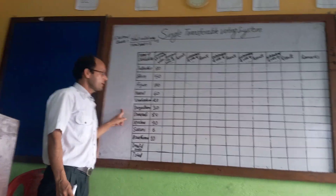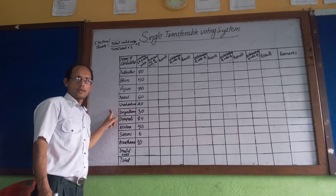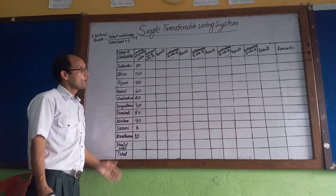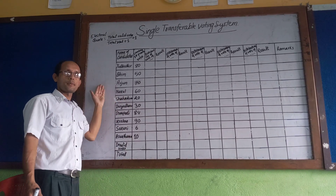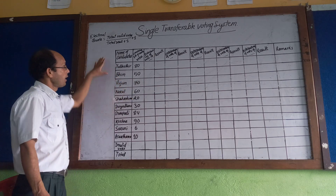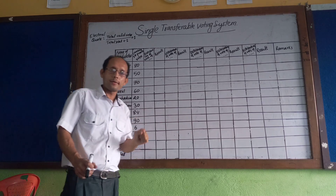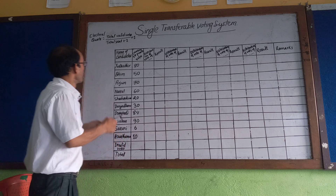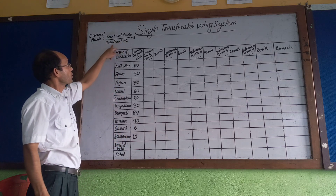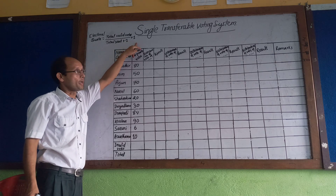The Single Transferable Voting system is used in multi-member constituencies — that is, any constituency where multiple members are to be elected. As shown in this chart, the first step is to determine the minimum votes required, which is called the electoral quota. The formula is: total valid votes divided by (total seats plus one), plus one.